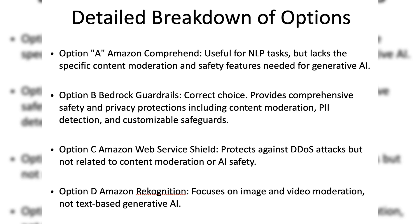Let's take a look at each option one by one. Option A: Amazon Comprehend. While useful for NLP tasks like sentiment analysis, it doesn't provide the specific content moderation and safety features required for generative AI.